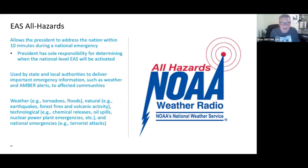EAS is all-hazards. While originally designed to allow the president to address the nation within 10 minutes during a national emergency — and the president has sole responsibility for determining whether a national level EAS will be activated — EAS can also be used by state and local authorities. This would include weather alerts, AMBER alerts, and other naturally occurring alerts such as earthquakes, forest fires, and volcanic activity; technological issues such as chemical releases, oil spills, and nuclear power plant emergencies; and other national emergencies such as terrorist attacks. NOAA Weather Radio is part of the EAS all-hazards system and is one of the dissemination methods for EAS.